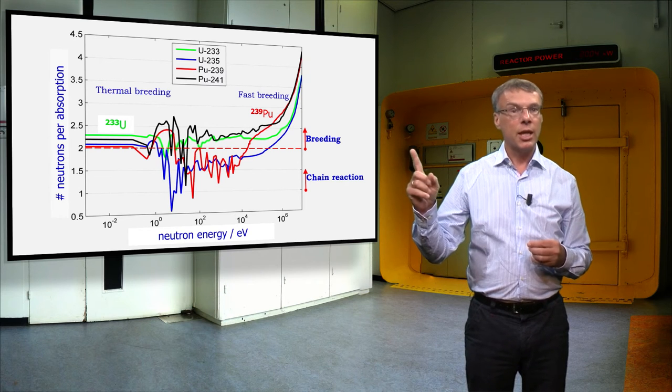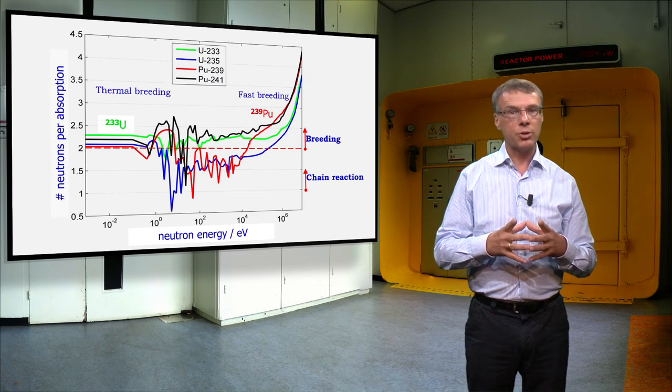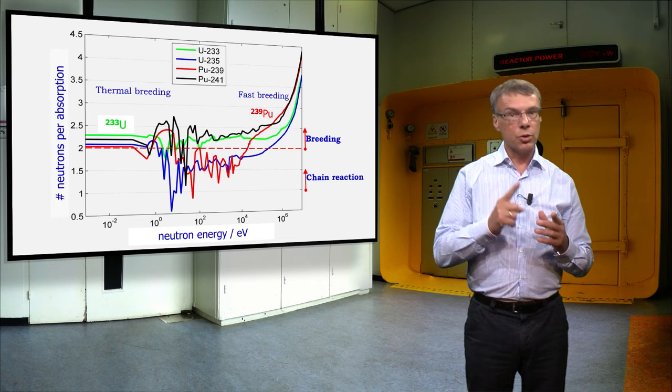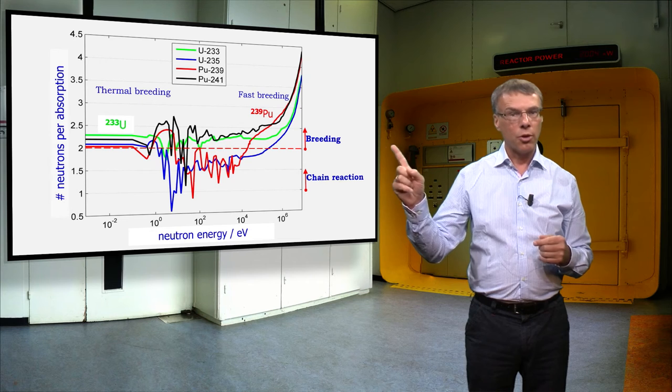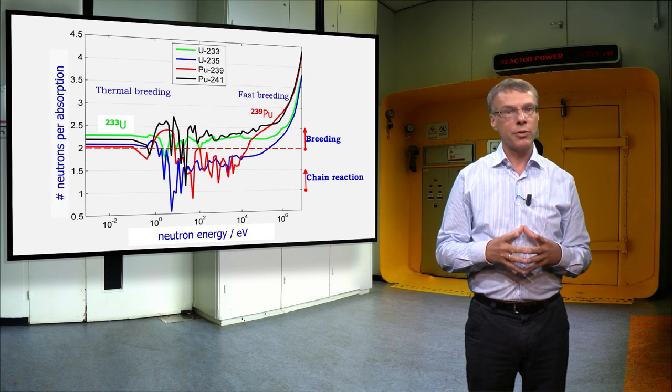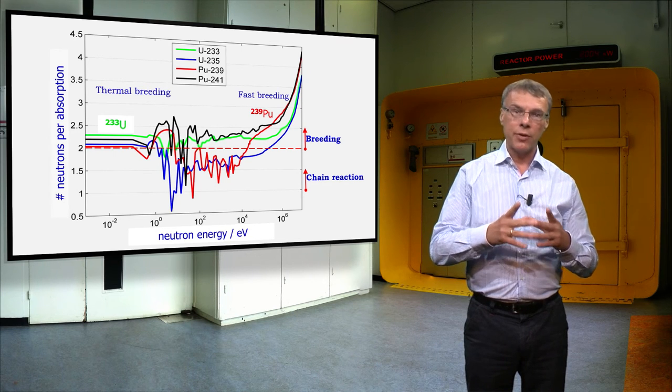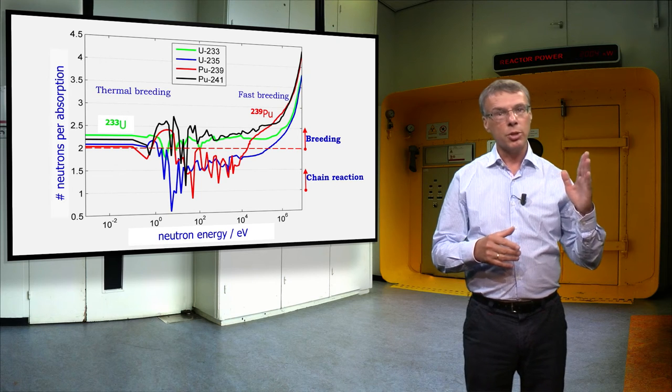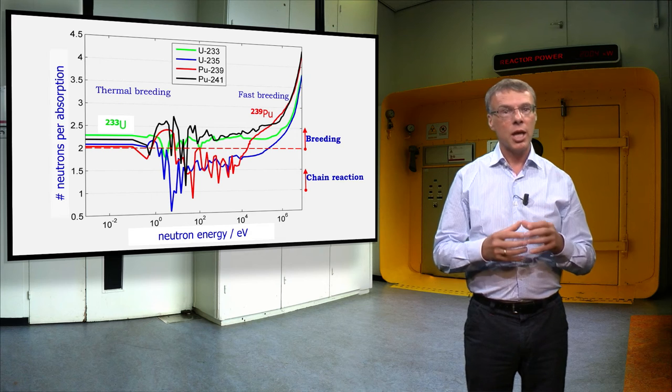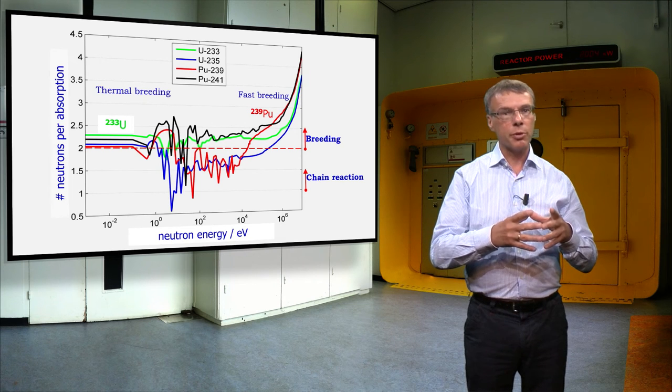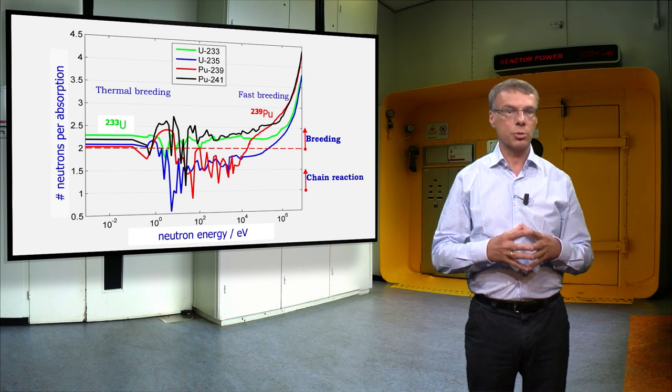As you can see, this parameter is strongly dependent on energy. If the neutron initiating a new fission is thermal, the thorium fuel cycle is most beneficial, while in the fast energy range the uranium-plutonium fuel cycle has preference. In that range, the plutonium isotopes give considerably more neutrons per fission than the uranium isotopes.